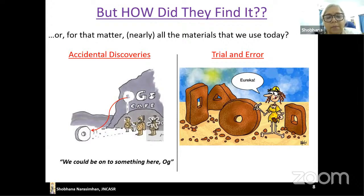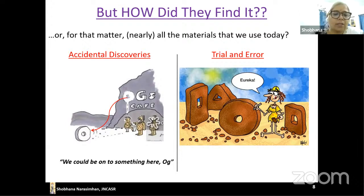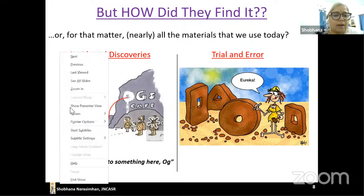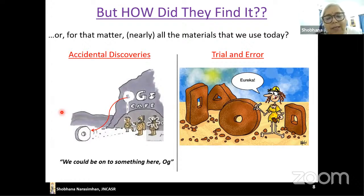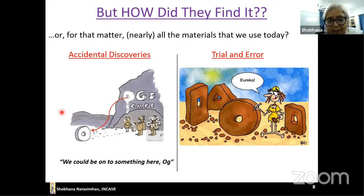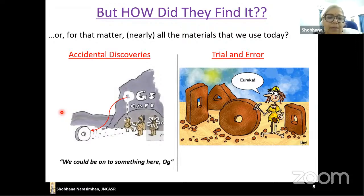If you think about material discoveries until very recent times, they were all either accidental discoveries or developed by trial and error. Two cartoons on this slide illustrate humorous depictions of how the wheel might have been accidentally discovered, or discovered by trial and error. It's quite fascinating to think that the rich plethora of materials we have were developed in these ways.